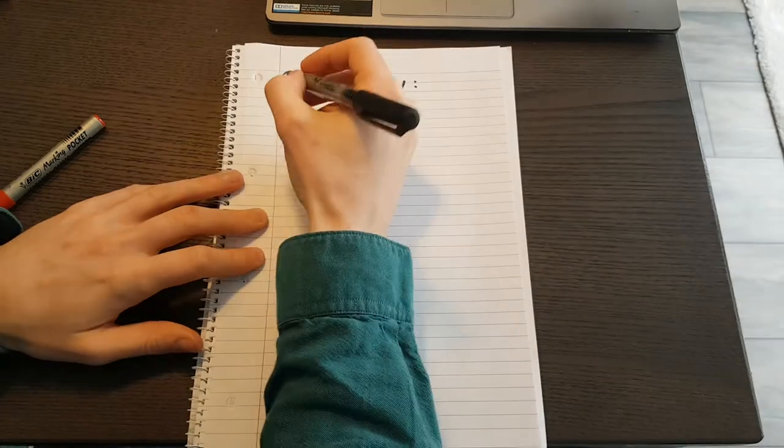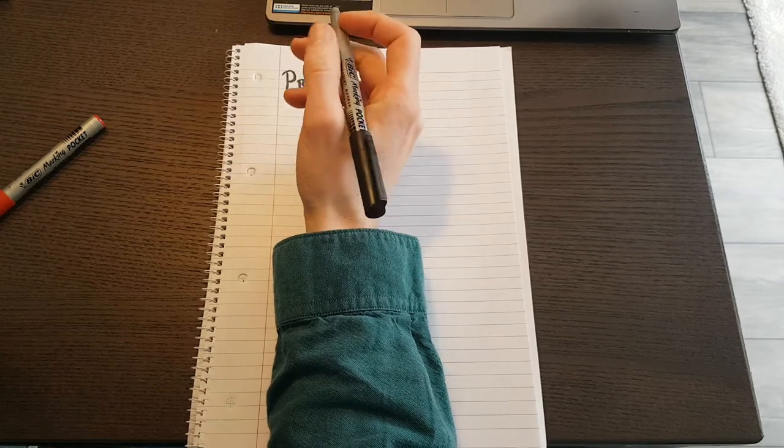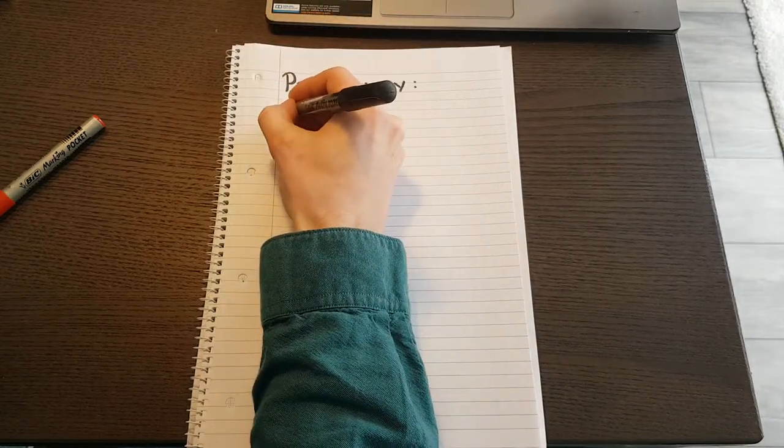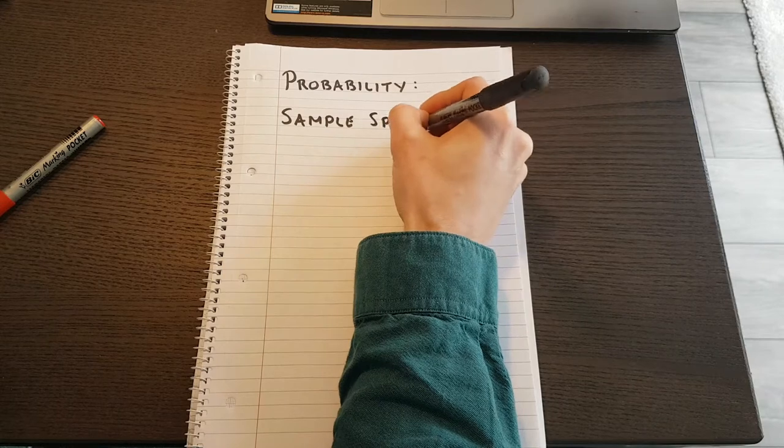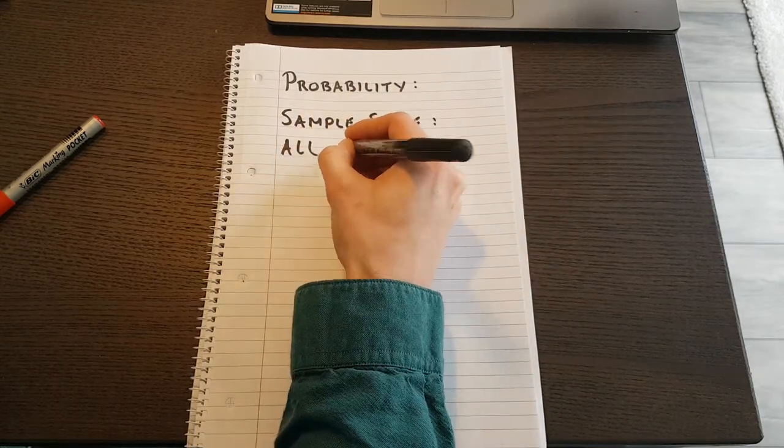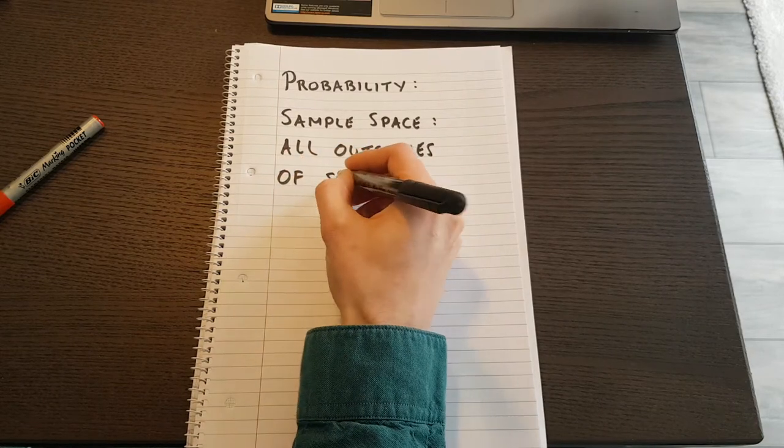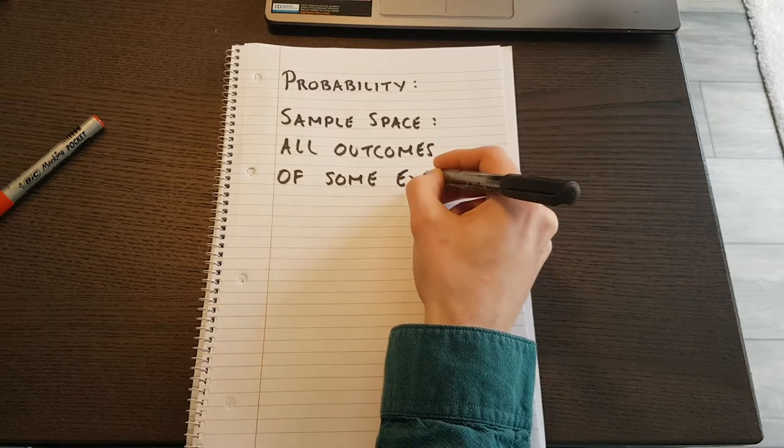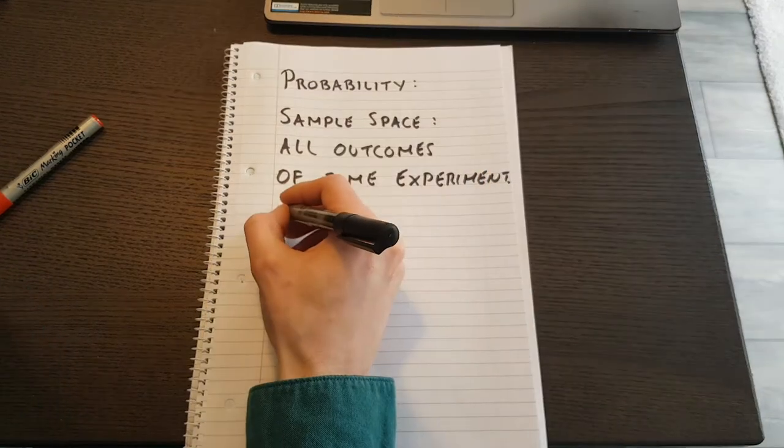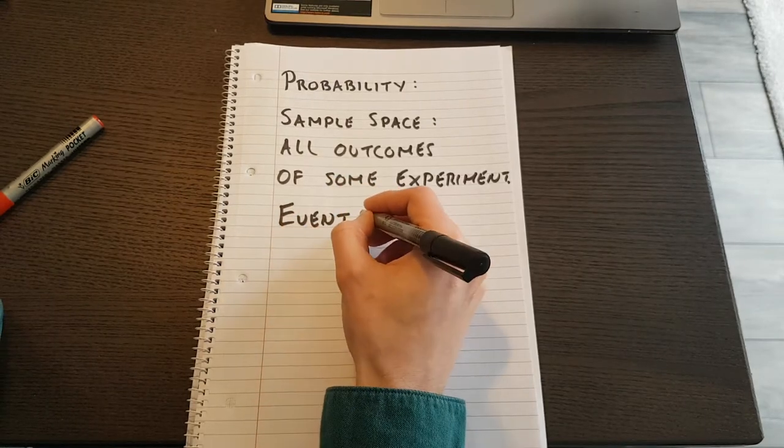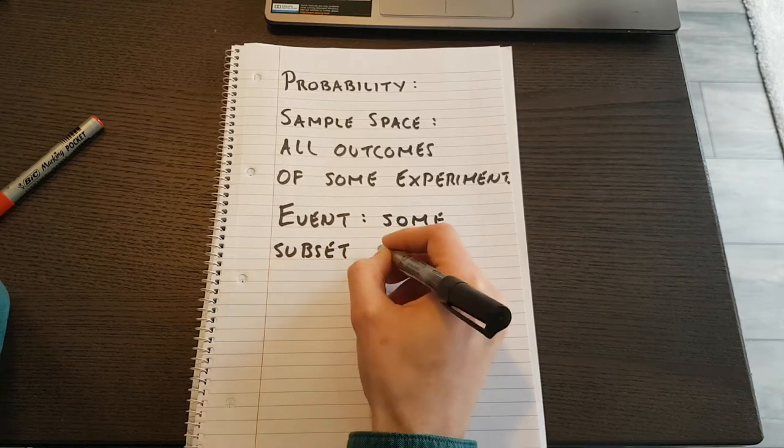Just as a reminder, we said that the sample space, and this was the last lecture, was the set of all outcomes, all possible outcomes of some experiment. An event is some subset of the sample space.